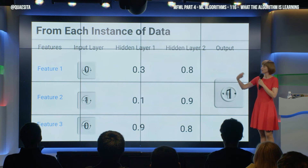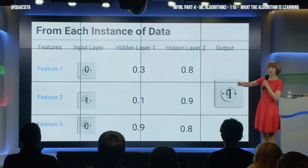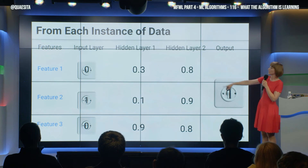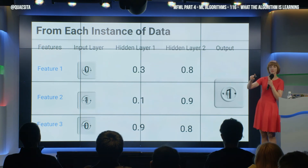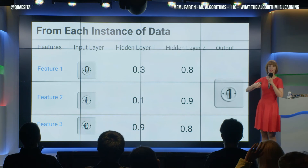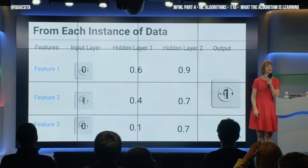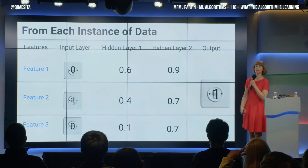And so, as your network evolves and changes and learns — because it will learn from each individual data point in the simplest implementation — you might have the same input values for two data points. But because the network has changed in between them, you might have different hidden layer activations. So that's all from the individual instances.